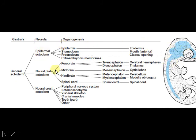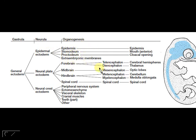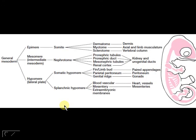For the ectoderm, there are different parts: the epidermal ectoderm, the neural plate ectoderm, and the neural crest. Each of these will eventually have their destinies — what they become in the future — all summarized in this diagram.